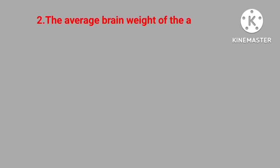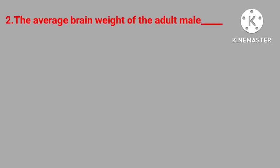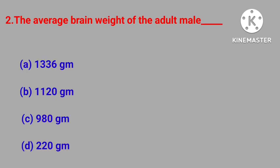Question number two: the average brain weight of the adult male. 1336 gram, 1120 gram, 980 gram, 220 gram. Correct answer is 1336 gram.